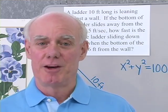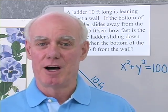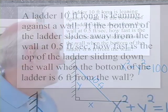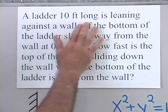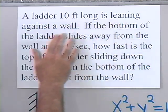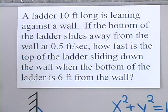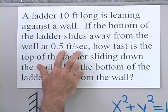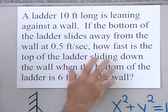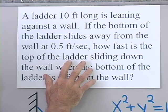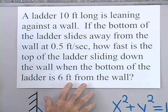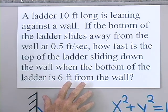Let's take a look at a related rate problem from calculus. A ladder 10 feet long is leaning against a wall. If the bottom of the ladder slides away from the wall at 0.5 feet per second, how fast is the top of the ladder sliding down the wall when the bottom of the ladder is 6 feet from the wall?